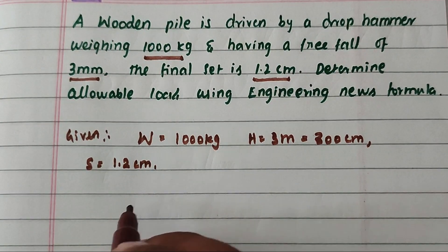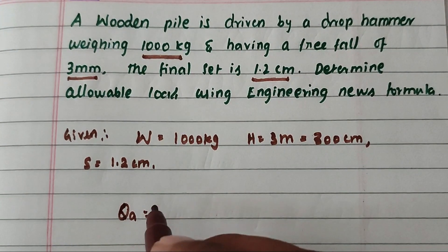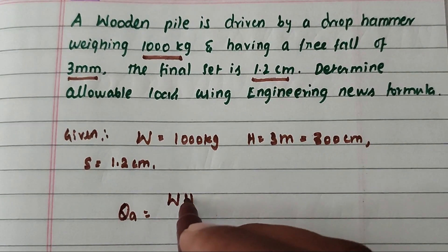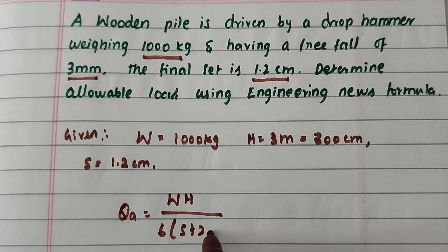Now we have to find the allowable load QA. The formula is: QA = (W × H) / (6 × (S + 2.5)).